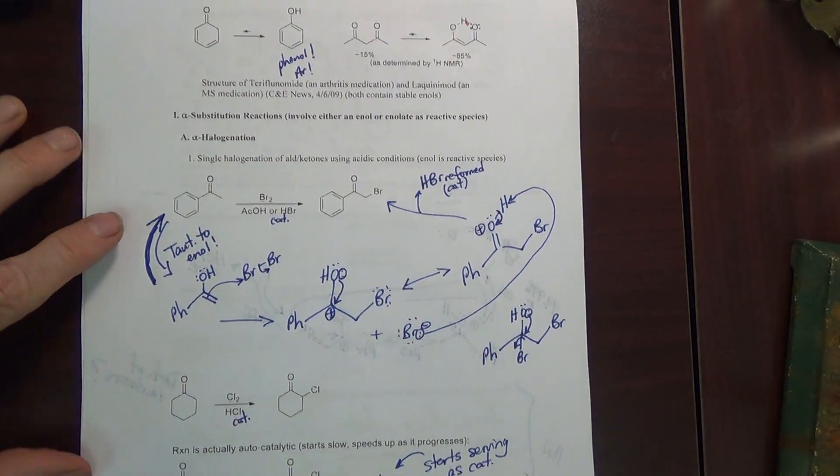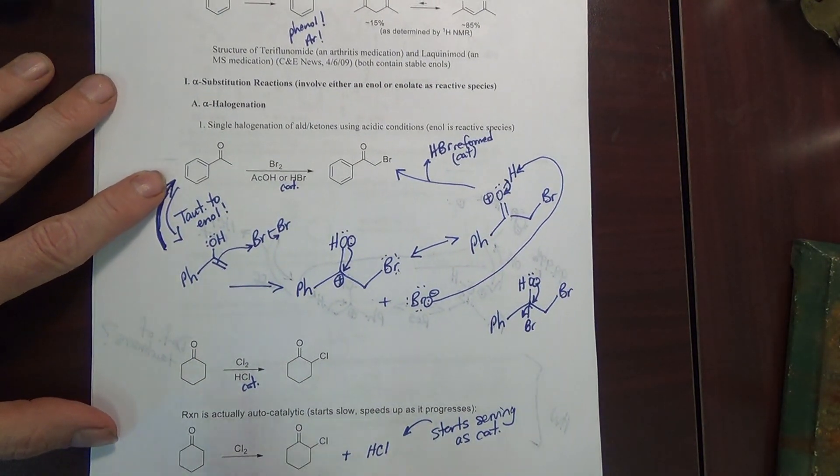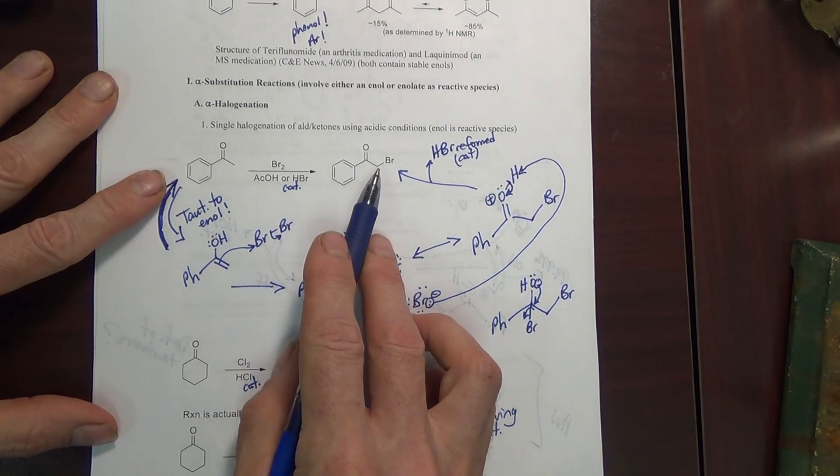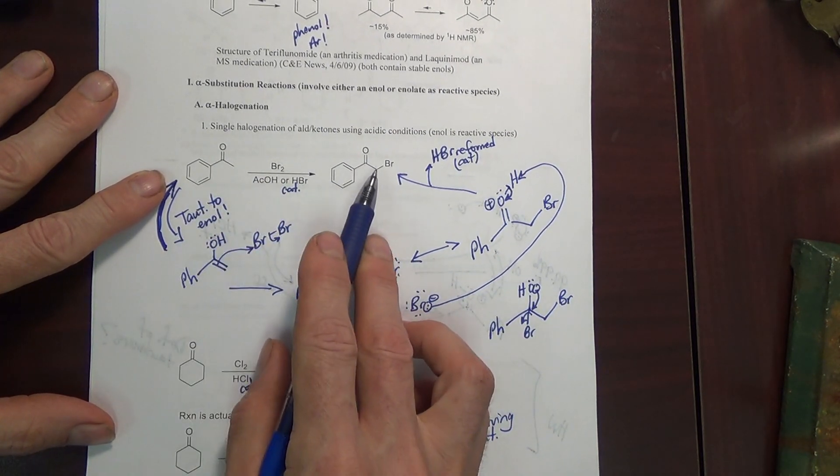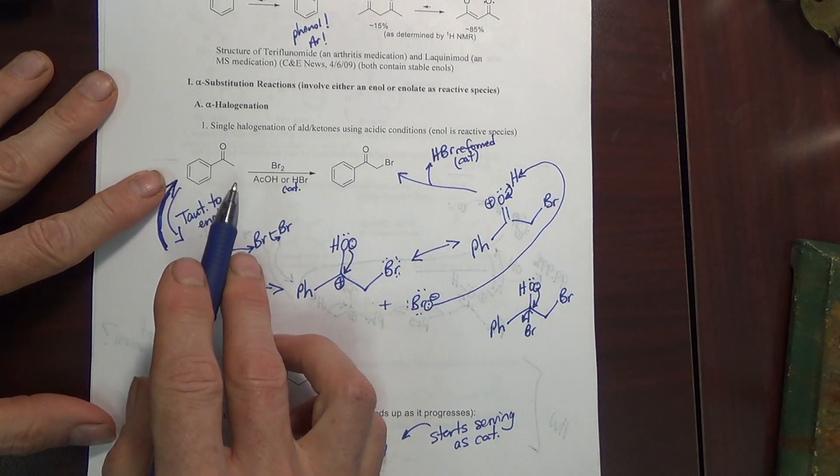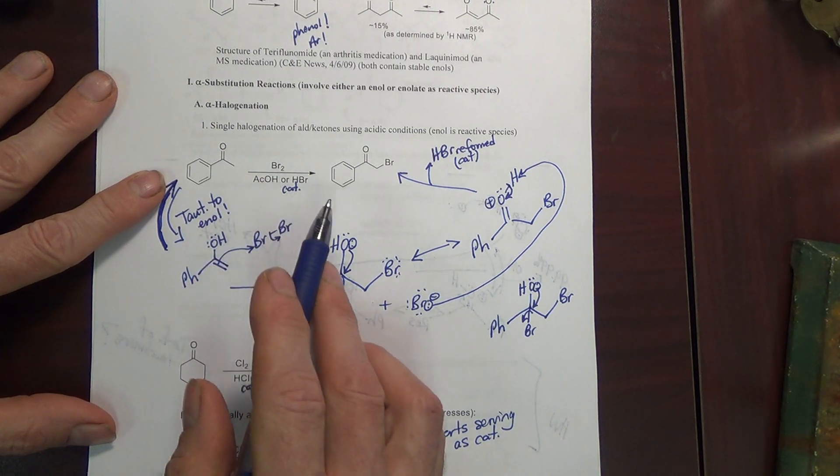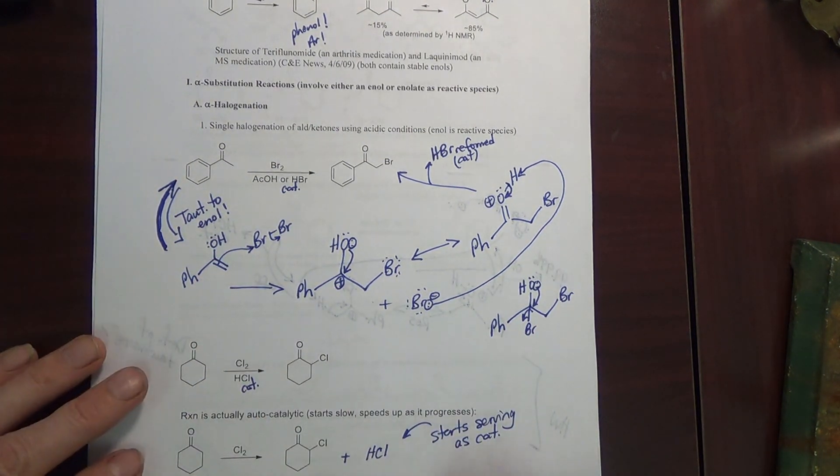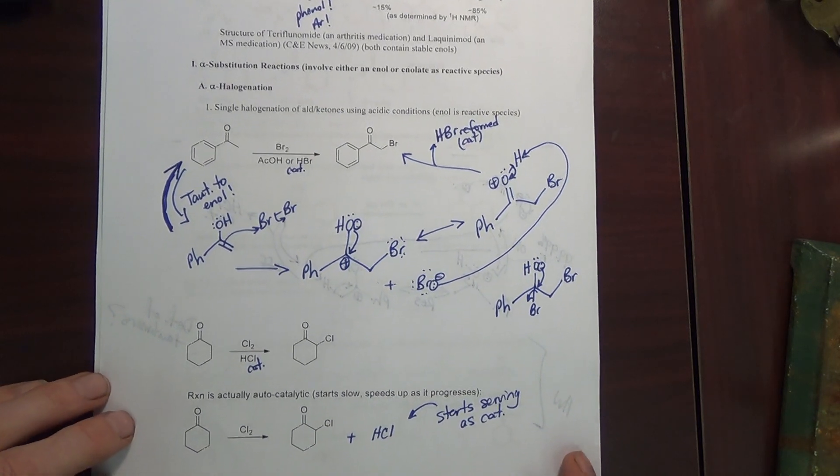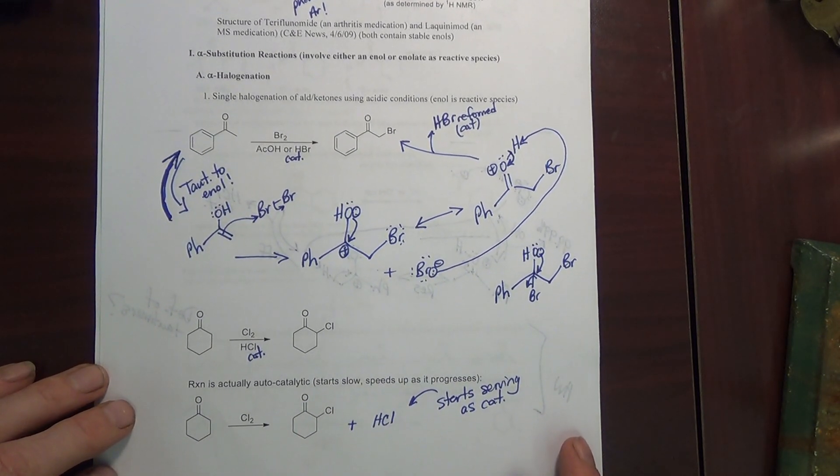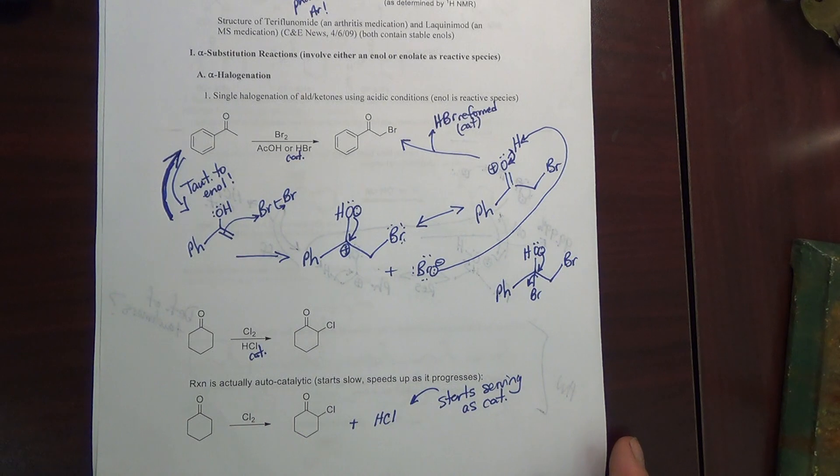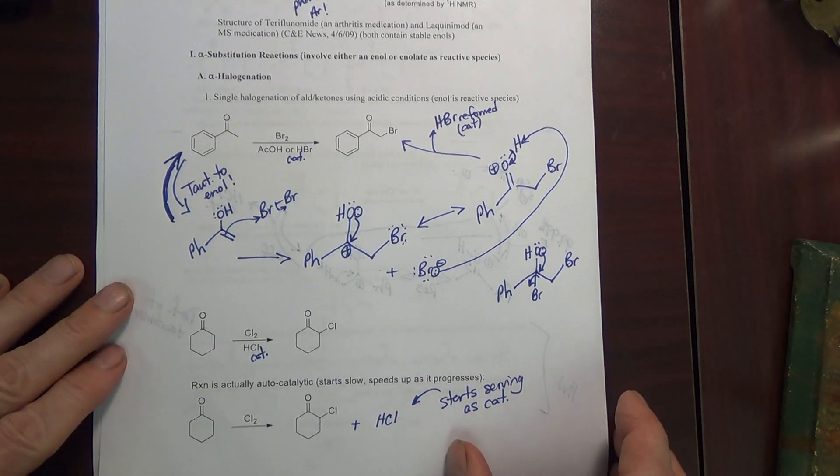Under acidic conditions, you can just put on one halogen. If you want to put on just one halogen, it's typically best to do it under acidic conditions, or that's really the only way you can do it.